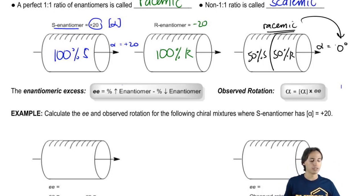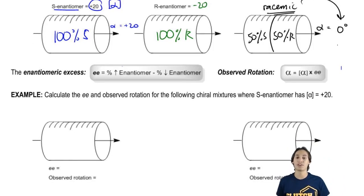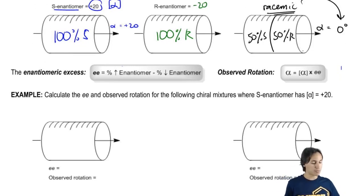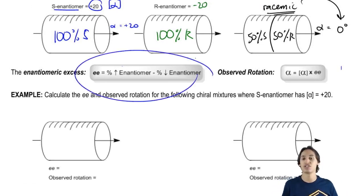So now what I want to talk about is something called the enantiomeric excess. And what the enantiomeric excess says is it's basically you take your highest percentage enantiomer and subtract your lowest percentage enantiomer. You only have two enantiomers. So you would take your highest minus your lowest and whatever you have at the end, that's going to be your enantiomeric excess. And that's the amount that is actually optically active.